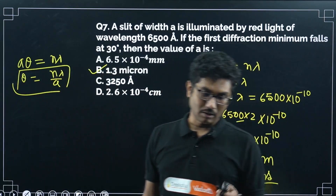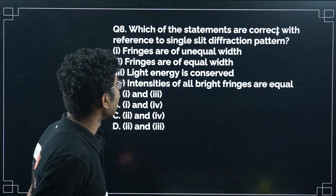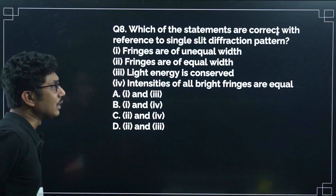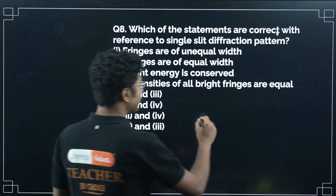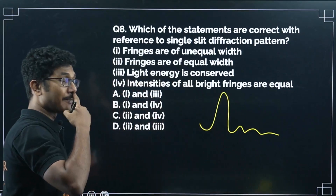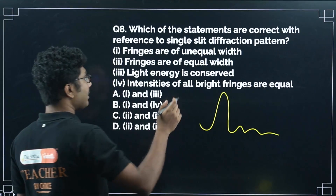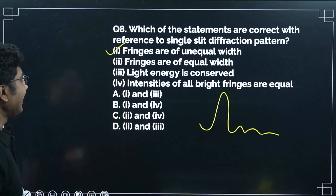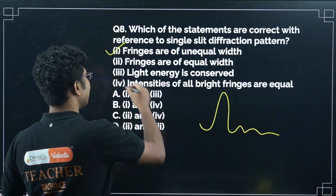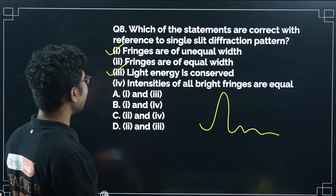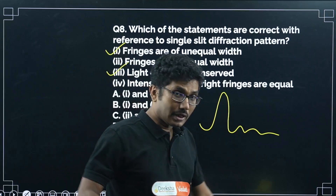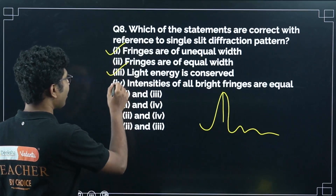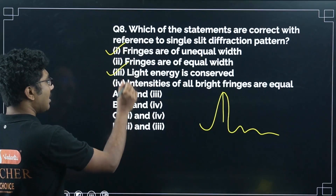Which statements are correct for single slit diffraction? Statement 1: fringes are of unequal width — yes, central bright is wider than the secondary maxima. Statement 2: fringes of equal width — no. Statement 3: light energy is conserved — yes. Statement 4: intensity of all bright fringes equal — no, intensity decreases from center. So correct statements are 1 and 3, which is option A.